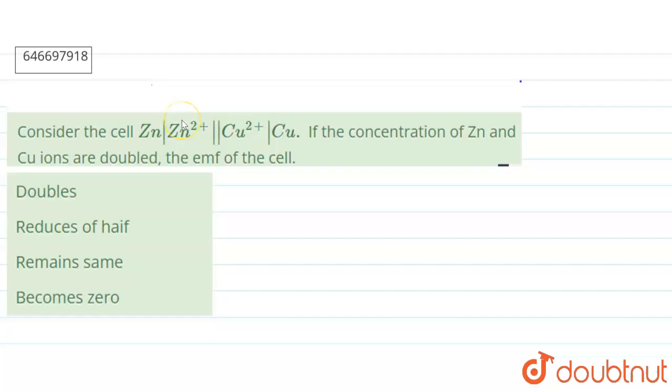Hello everyone, so today's question is consider the cell Zn, Zn2+, Cu2+, Cu. If the concentration of Zn and Cu ions are doubled, then the EMF of the cell is doubled, reduced to half, remains same, or becomes zero.